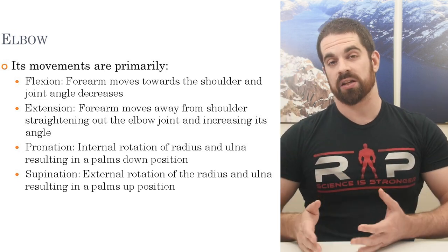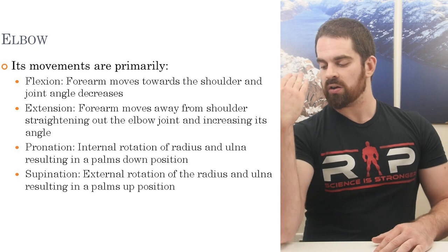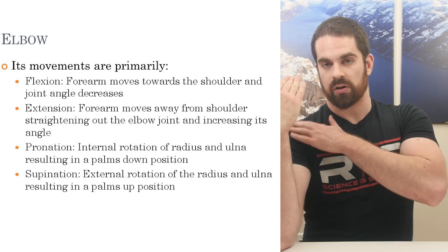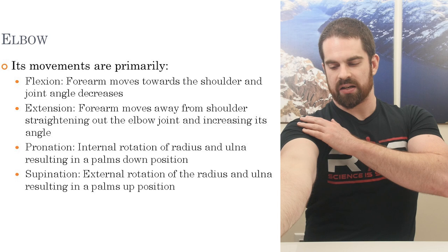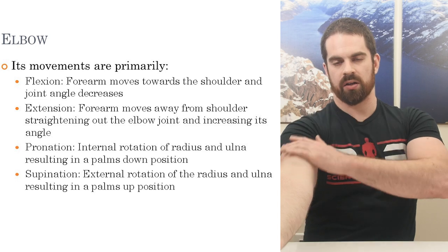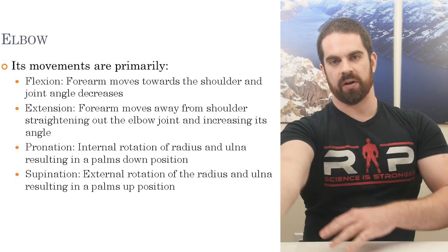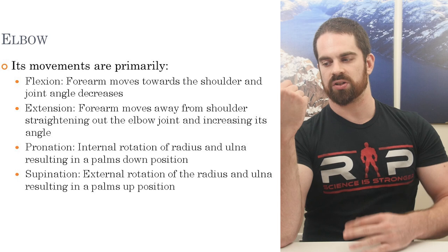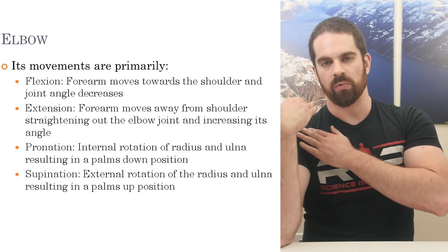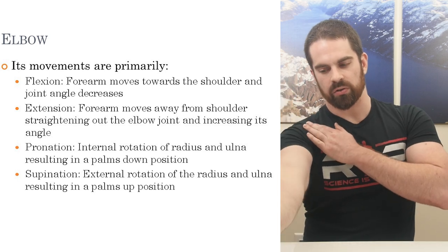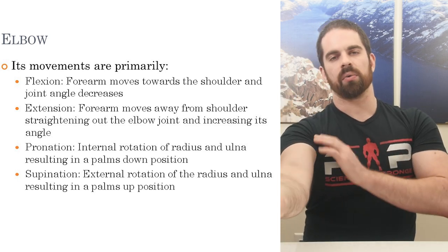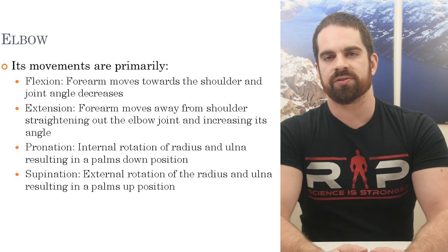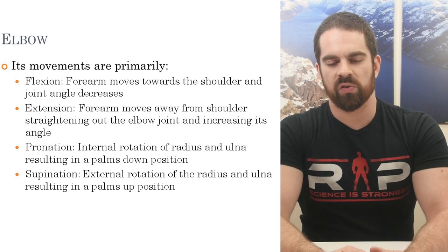During extension, it's the opposite. Starting with the hand closer to the shoulder, you extend the arm out and open up the joint angle until the arm is fully straight. So with extension, the forearm moves away from the shoulder and the joint angle of the elbow increases.